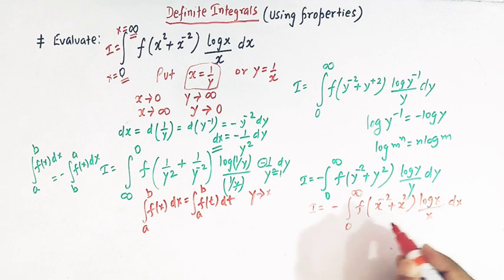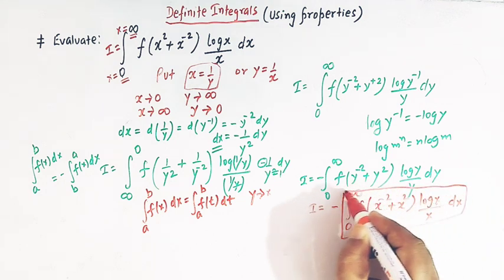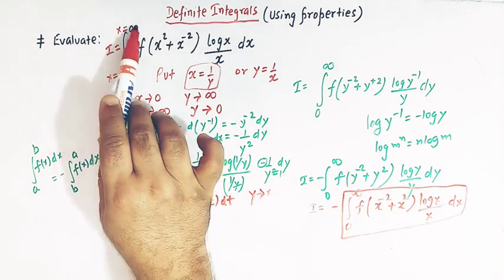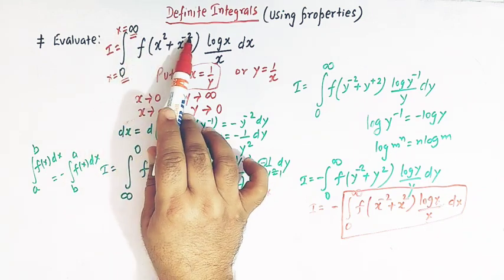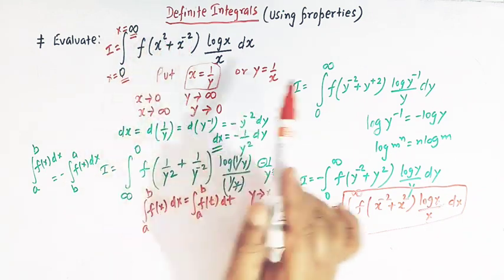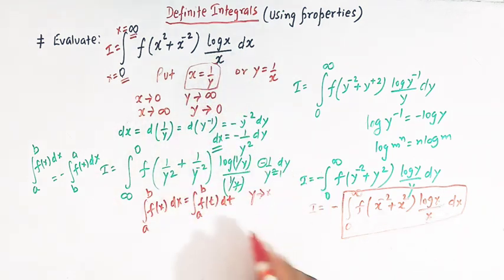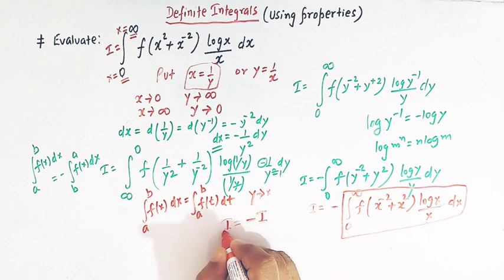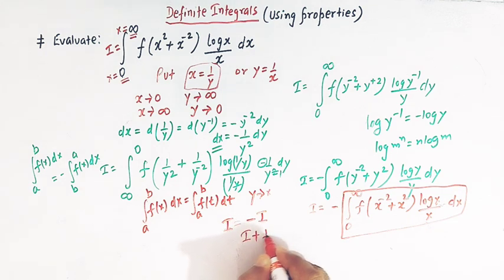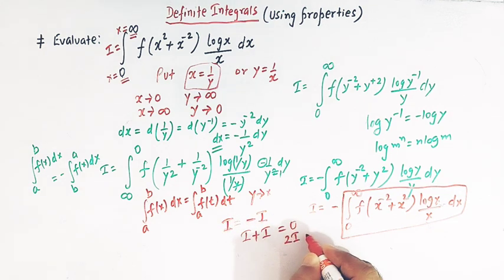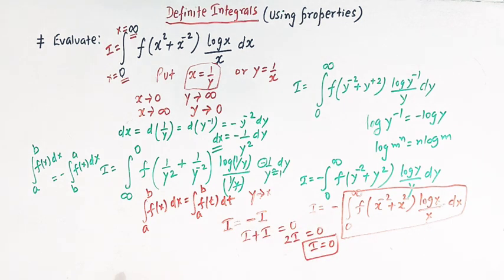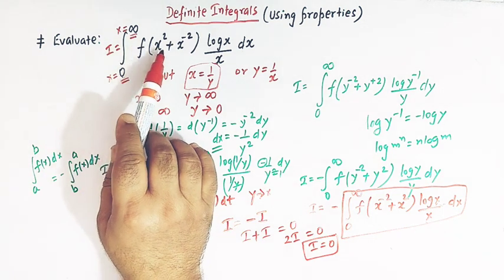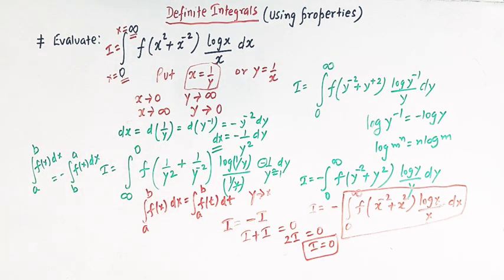So now we can see that this is our original integral from 0 to infinity of f of x raised to minus 2 plus x squared, times log x over x, dx. So we have I is equal to negative of I. Therefore I plus I equals 0, which gives 2I equals 0, so I equals 0. The value of this integral is equal to 0.